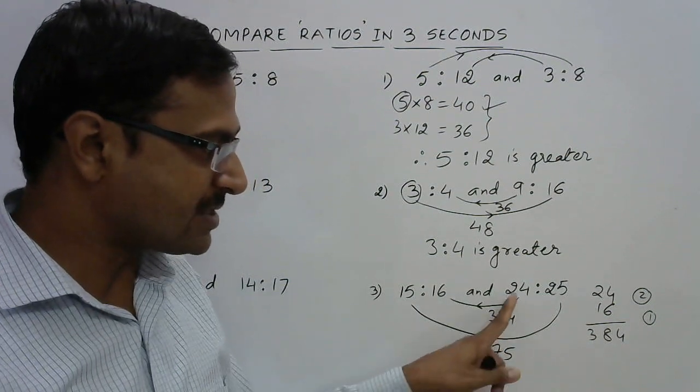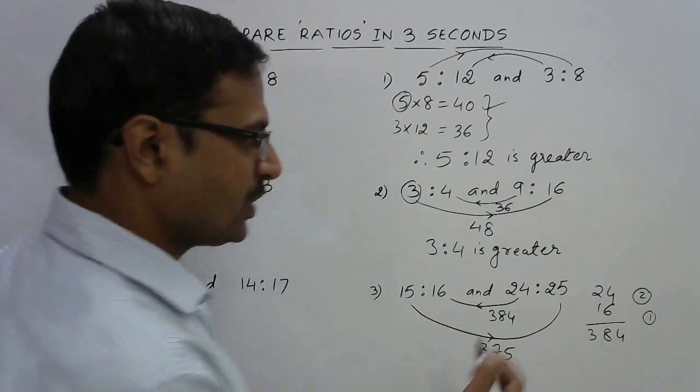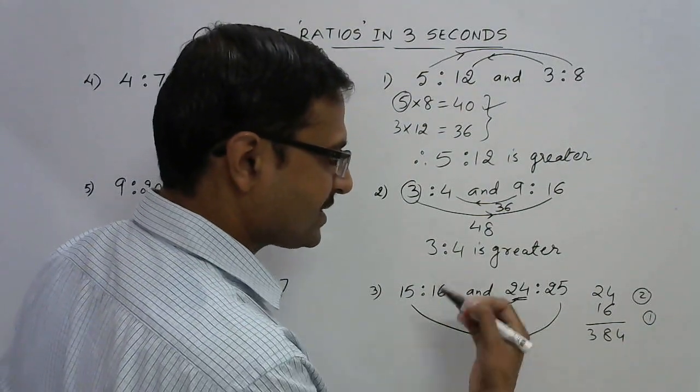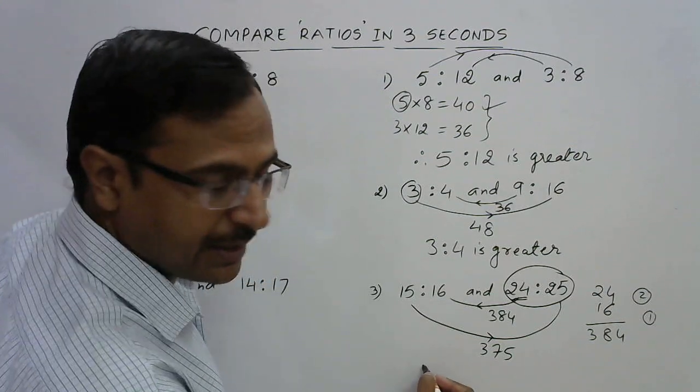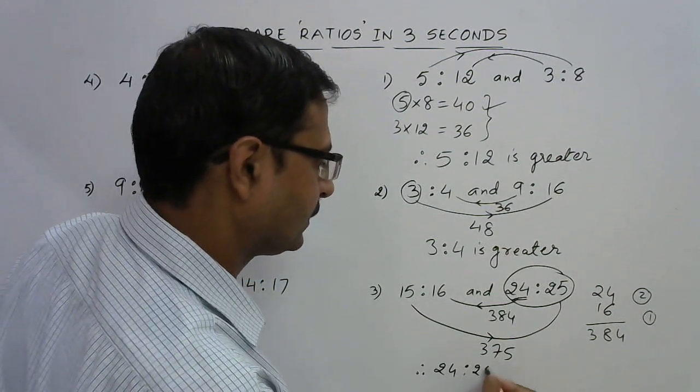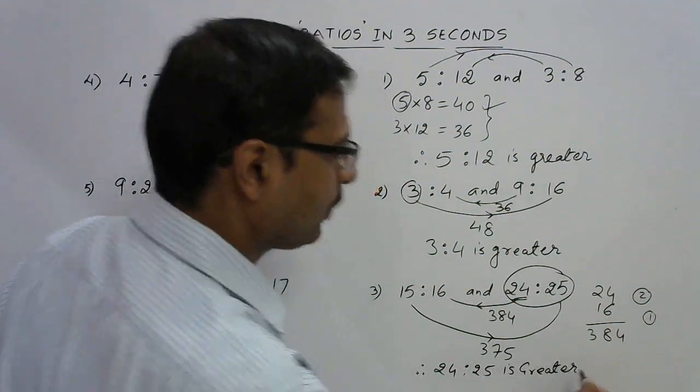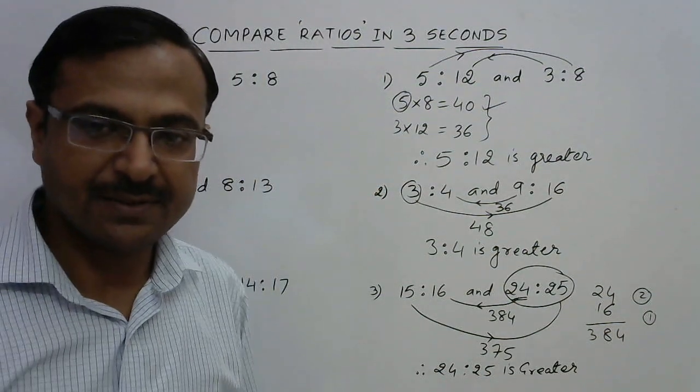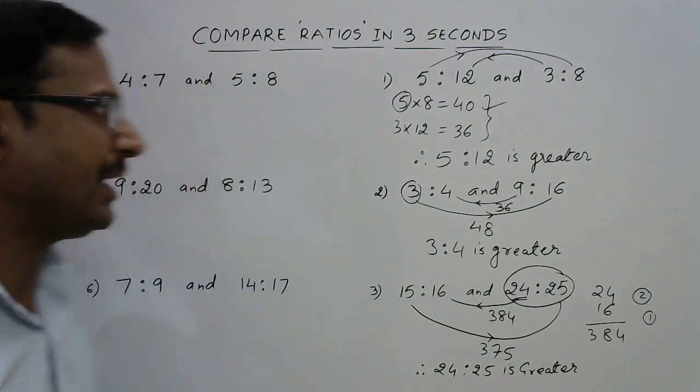Unlike here, the product 384 is greater and it is obtained by multiplying the first term of the second ratio with the second term of the first ratio. The first term is used in the second ratio, therefore 24 ratio 25 is greater. You can see, just finding two products and getting to the answer, it will take just 4 to 5 seconds time.